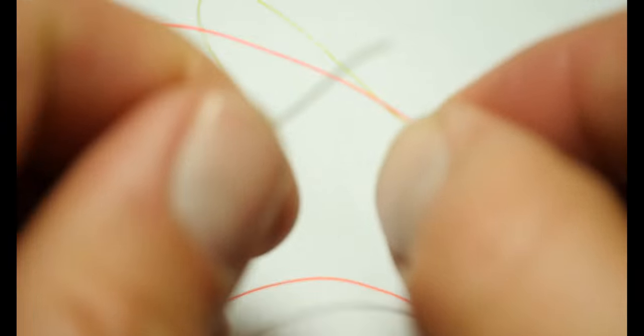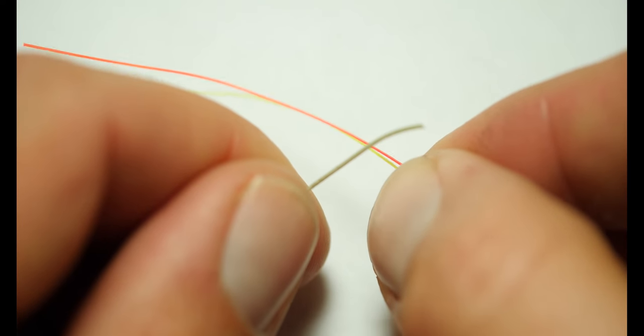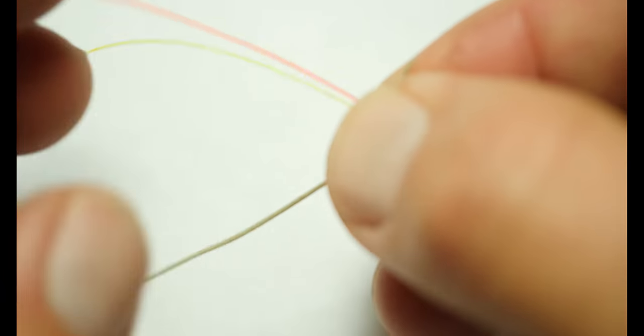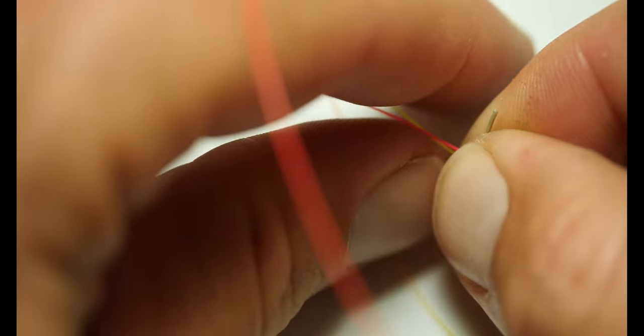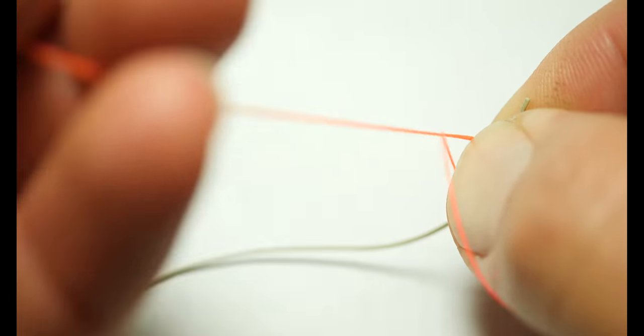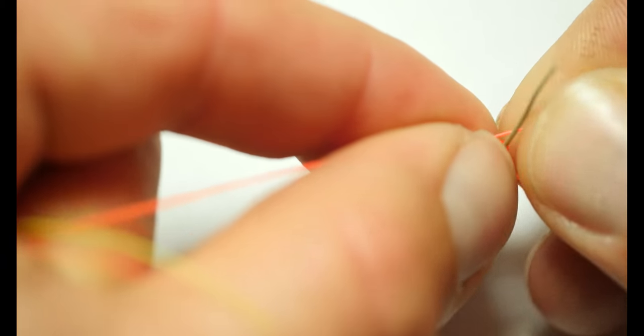First, I'm going to take some bi-color sider material that I've doubled over, and I'm going to wrap it around the main line. I have a loop here that I'm going to slide those tag ends through and cinch it down onto this line.